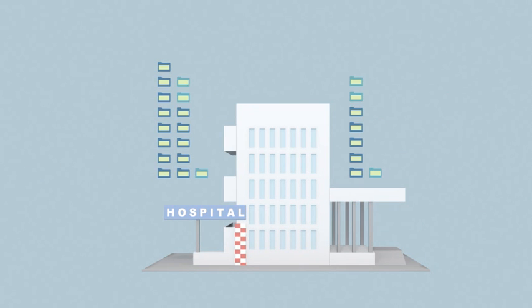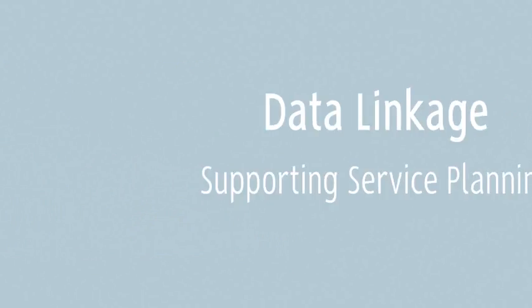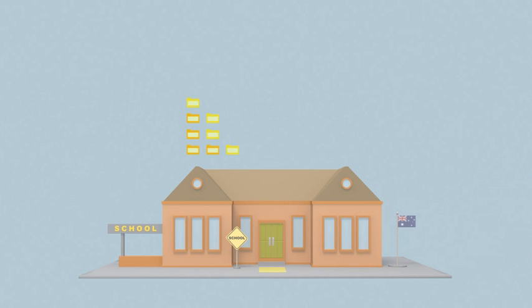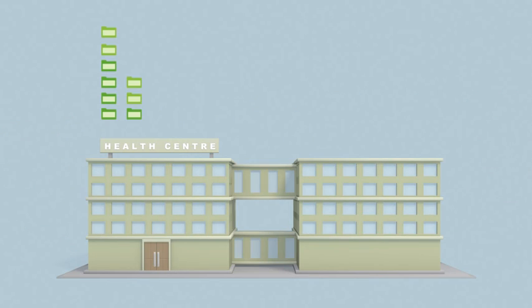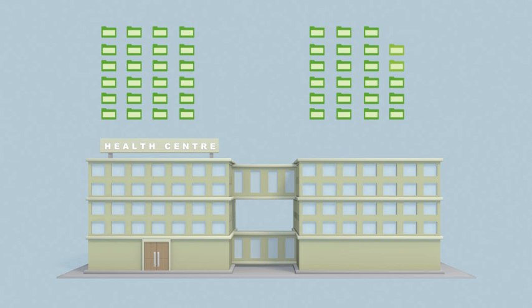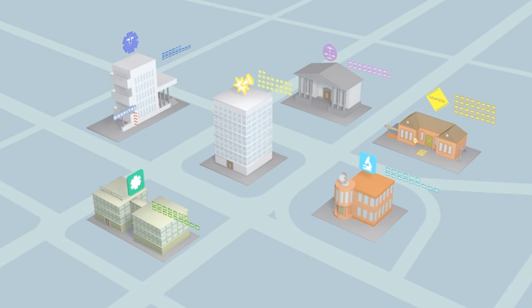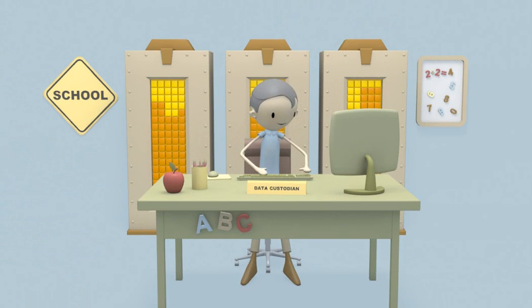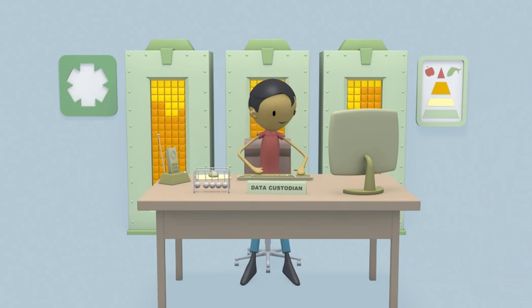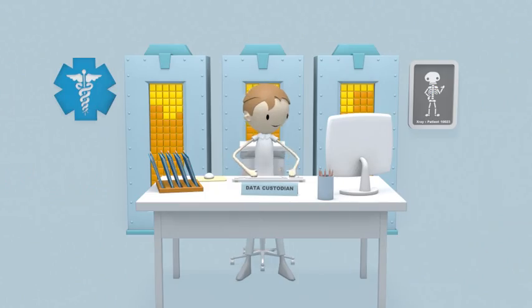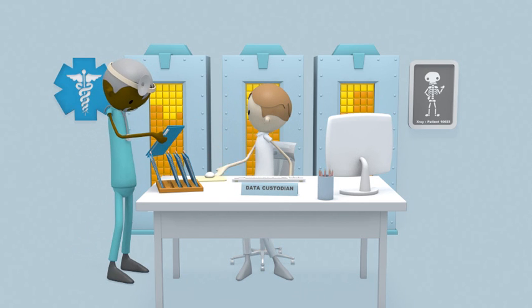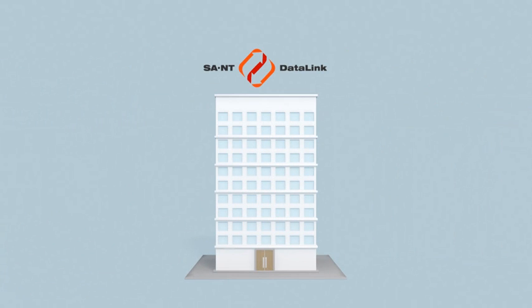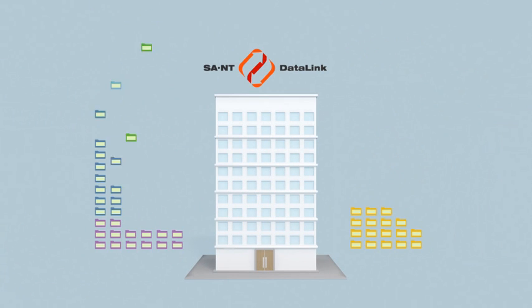Over a lifetime, an individual accesses many services provided by lots of different organisations. Each time, information about who they are and what service they accessed is recorded. We call these records administrative data. Over the years, organisations collect a wealth of administrative data. Within each organisation there are data custodians, whose job is to manage the organisation's data and ensure that client privacy and confidentiality is maintained. Each organisation generally only uses its data in-house to meet their own specific needs, and because this data is not easily shared, it's often impossible to discover important relationships and trends across multiple data sets.